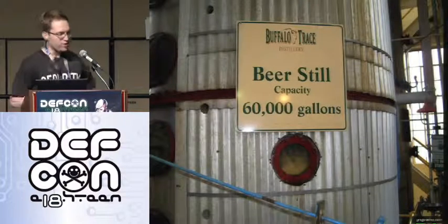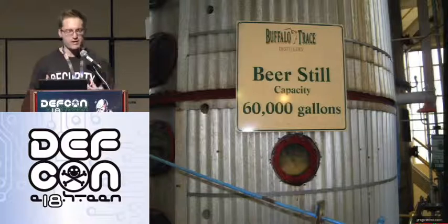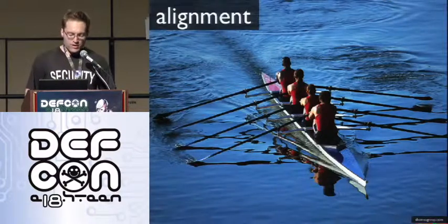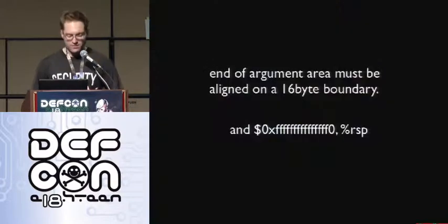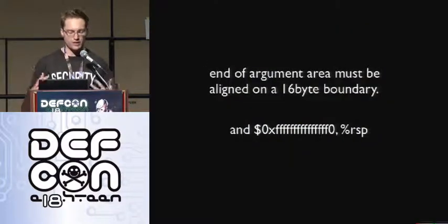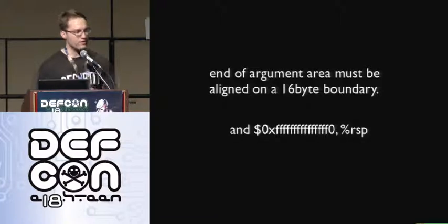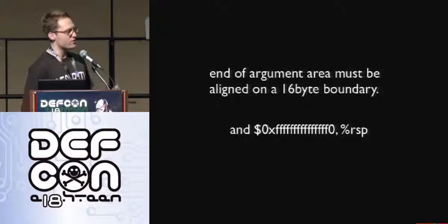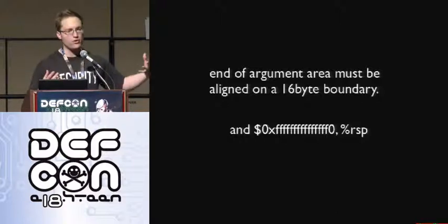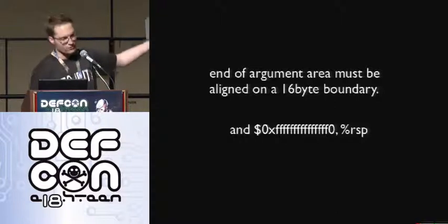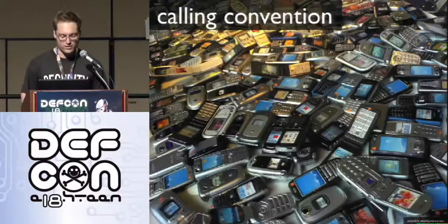Instead of actually reading all this stuff, we can just distill it down to the main things we need to accomplish the function hooking. The first thing we need to worry about is alignment. All we really care about for alignment in this talk with function hooking is that the end of the argument area before you call a function has to be aligned on a 16-byte boundary. The way this is usually accomplished is either the compiler generates code that never misaligns a stack, or you'll see alignment instructions sprinkled throughout your code.